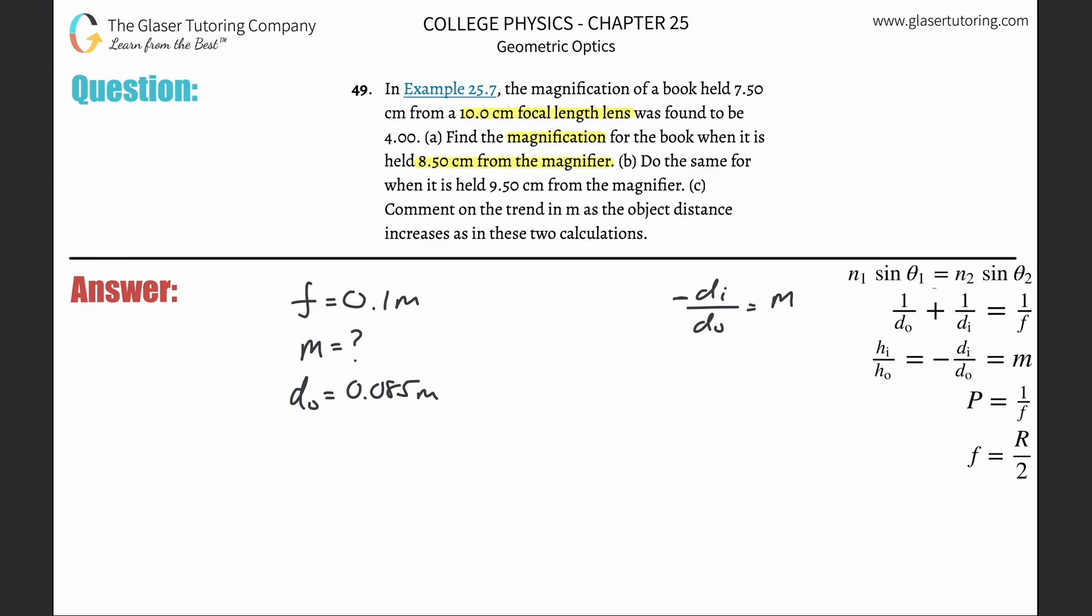That's my question now. I'm not thinking about magnification. I'm thinking about how do I find DI or the image distance given the information I have. And the answer is I use the thin lens equation: one divided by the object distance plus one divided by the image distance will equal one divided by the focal length.